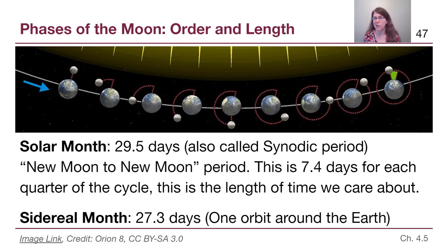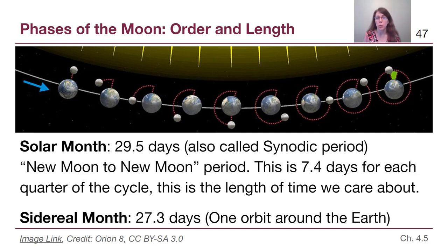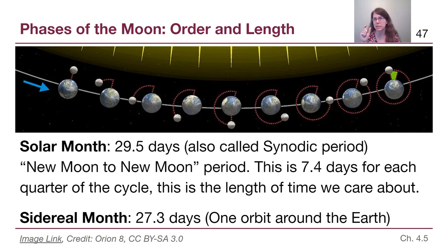The solar month — also called the synodic period — is the important one, from new moon to new moon. We don't need to memorize those terms in isolation, but when we are talking about the phases of the moon, it is more than just once around the earth. It is lined up again the way it was at the start of the cycle, and so that's 29.5 days. Knowing that it's about a month is extremely useful. And because it's about a month and a month has about four weeks, a very easy rule of thumb is that from new moon to first quarter takes about a week, and from new moon to full moon takes about two weeks. We need that overall sense of how long all this is taking.